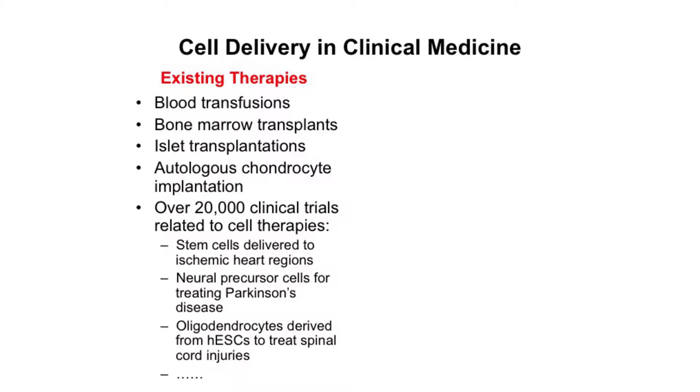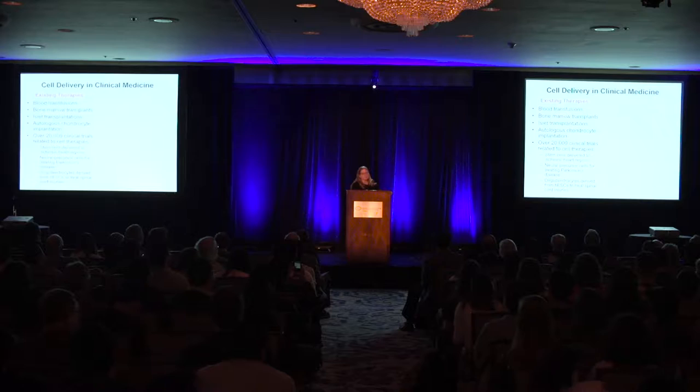Thinking about the building blocks in our body — our body is composed of about a trillion different cells, and those cells are responsible for growth, healing, and maintaining us throughout our lives. Sometimes one component is delivered back to us to help save our lives. Blood transfusions have been around for a long time. Bone marrow transplants are used to treat patients that have certain cancers, in some cases putting them into remission.